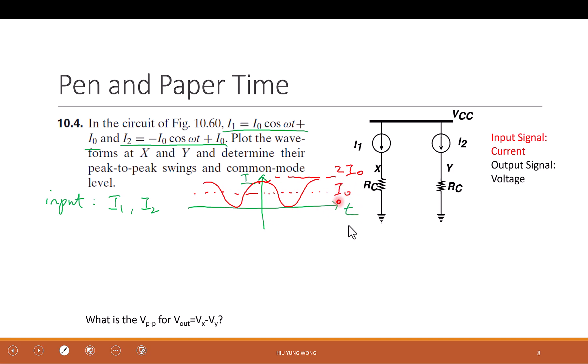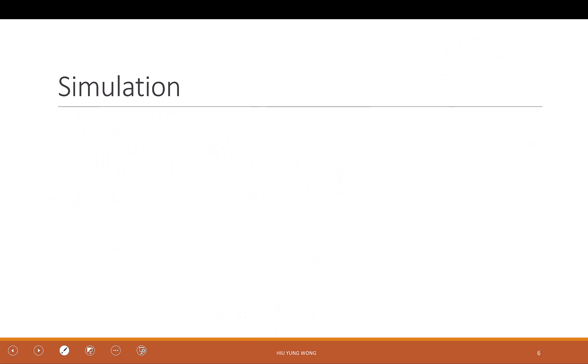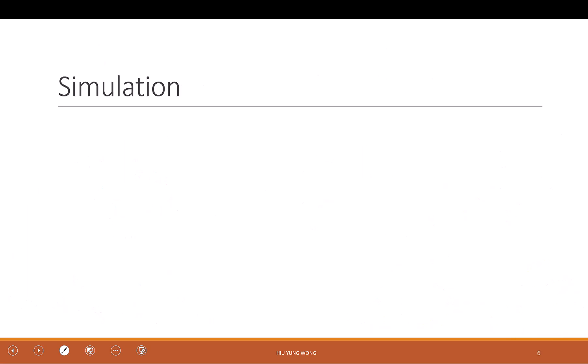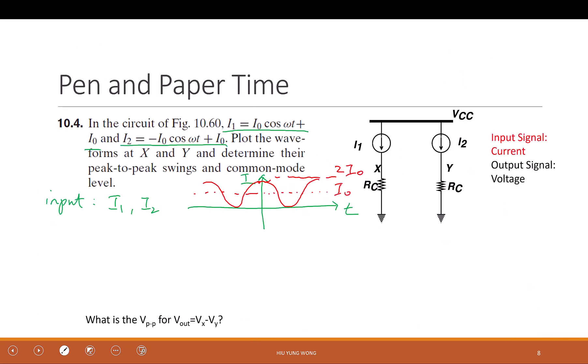And what do we call this offset? The common mode, right? It's a current, but just like here, I can have a common mode. VCM now becomes ICM. It's just a signal. So I say ICM equals to I0.